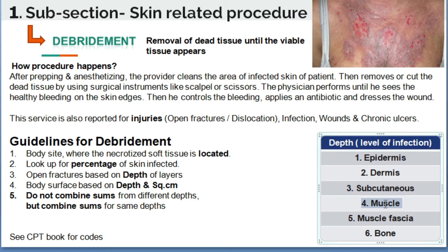However, if both sides are debrided to the same depth — for example, muscle — with the left side 20 square centimeters and the right side 20 square centimeters, then the coder can combine them as 40 square centimeters and code according to that level of depth. We will see the CPT book for the debridement codes.